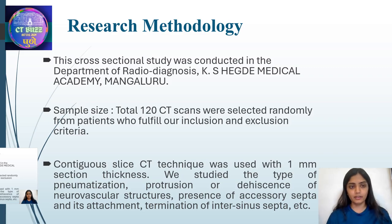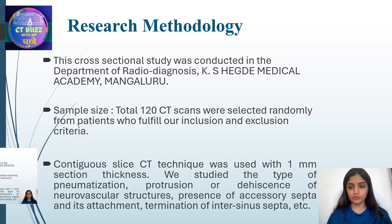Research Methodology: This cross-sectional study was conducted in the Department of Radio Diagnosis, Case Hector Medical Academy, Mangalore. A total of 120 CT scans were selected randomly from patients who fulfilled our inclusion and exclusion criteria. Contiguous slice CT technique was used with 1 mm section thickness. We studied the type of pneumatization, protrusion or dehiscence of the neurovascular structures, presence of accessory septa and its attachment, and domination of inter-sinus septa.